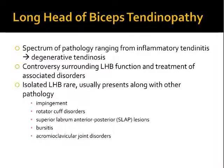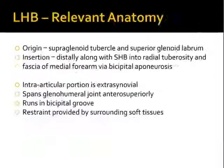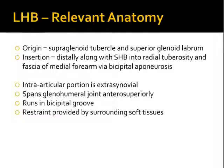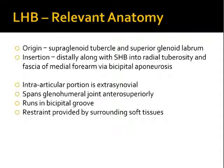The long head biceps originates from the supraglenoid tubercle, with somewhere between 40 to 60% of it also originating from the superior labrum. The insertion is distal — it inserts along with the short head biceps into the radial tuberosity and through the bicipital aponeurosis into the fascia of the medial forearm.